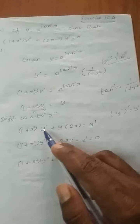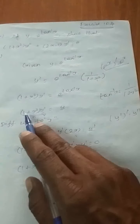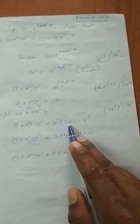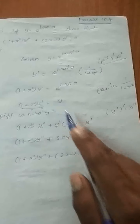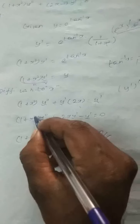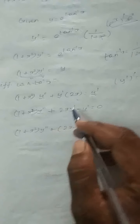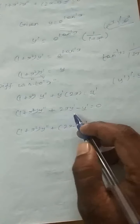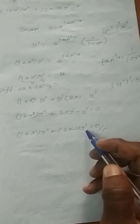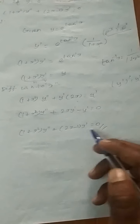So y' differentiated gives y''. After that, y' stable and (1 + x²) differentiated gives 2x. So 0 + 2x = 2x, giving 2xy'. Now we have (1 + x²)y'' + 2xy' on the left. The right side y differentiated gives y'. Rearranging: (1 + x²)y'' + 2xy' − y' = 0. Taking y' as a common factor: (1 + x²)y'' + (2x − 1)y' = 0.